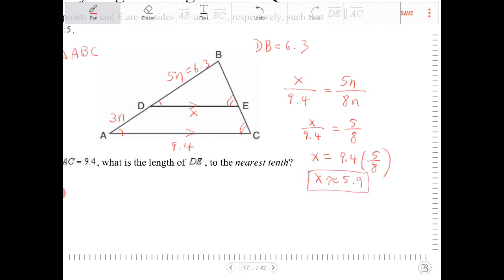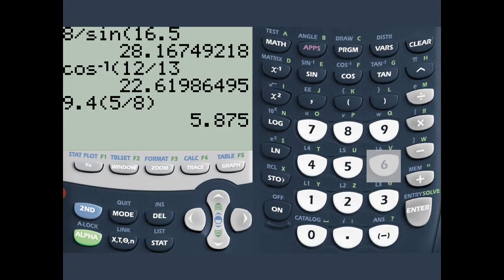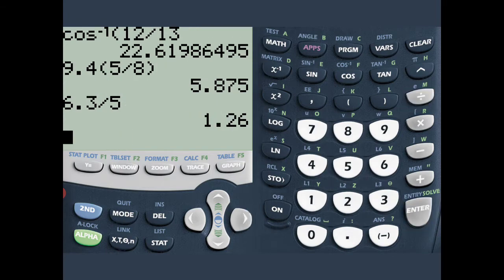Now let's say if I did use the 6.3. We can still figure out what that is. But in order for us to figure out what X is using 6.3 there, I will also need to figure out what is the length of AD here. So, if 5N is equal to 6.3, I'm going to figure out what N is. So, if 5N is equal to 6.3, N will therefore equal 6.3 divided by 5. So, I'm going to say 6.3 divided by 5. That's 1.26.